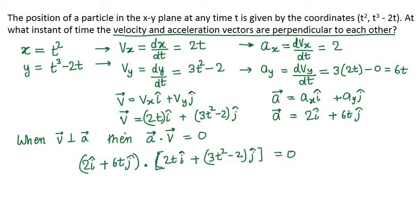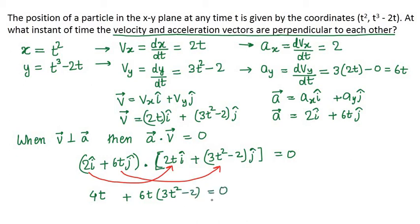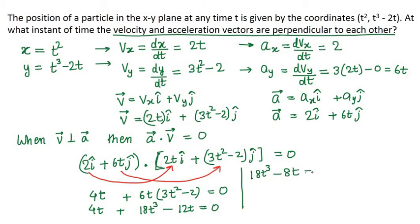To perform the dot product, we multiply the î component with the î component and the ĵ component with the ĵ component. So 2 × 2t gives 4t, and 6t multiplied by (3t² - 2) should be equal to 0. That means 4t + 18t³ - 12t equals 0. This gives us 18t³ - 8t equals 0. Taking 2t common, we get 9t² - 4 equals 0.